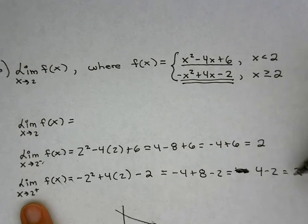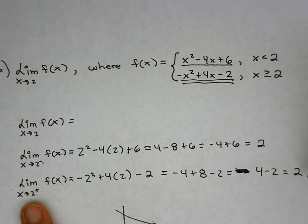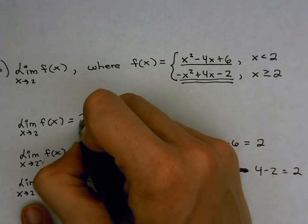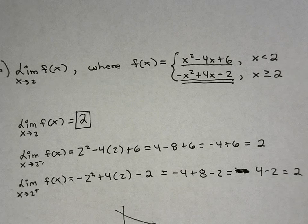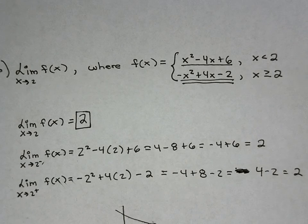Because I got 2 for both from the left and from the right, that's my overall limit. Again, if I had gotten 2 and 5, it would have been does not exist because it does not agree. There's your answer.